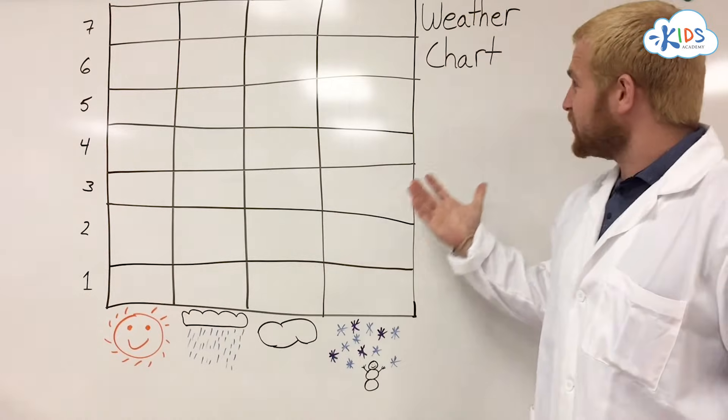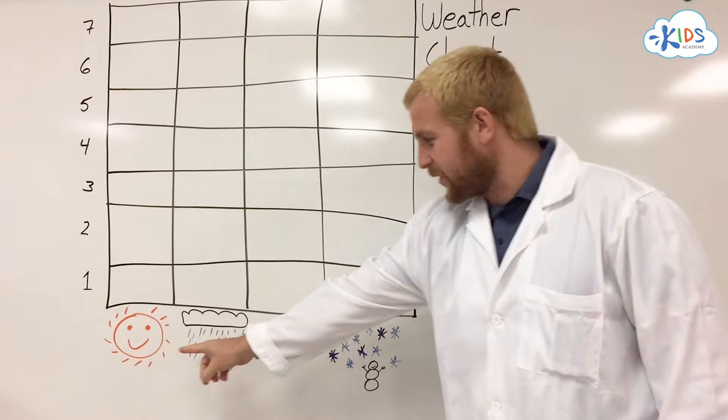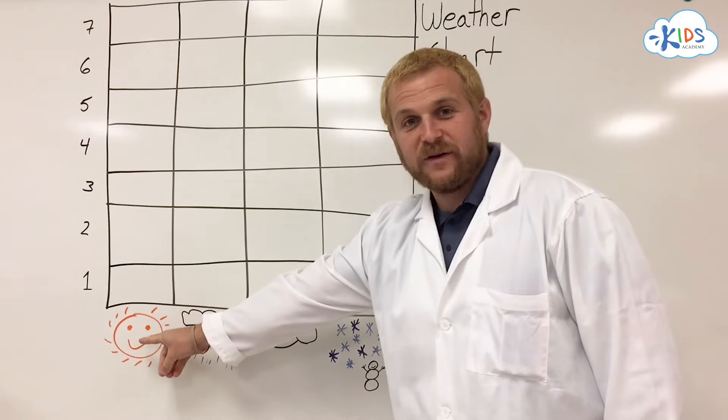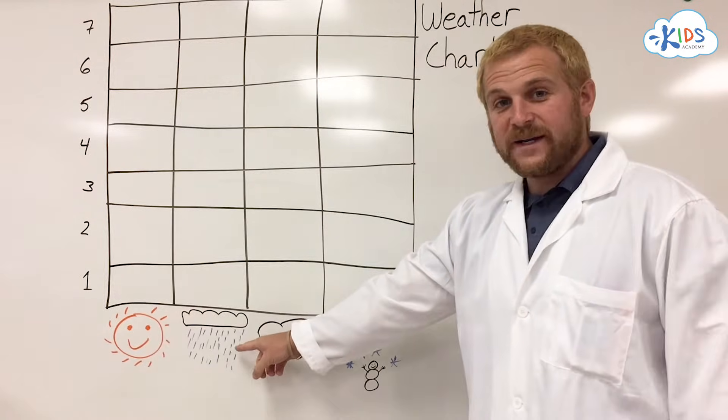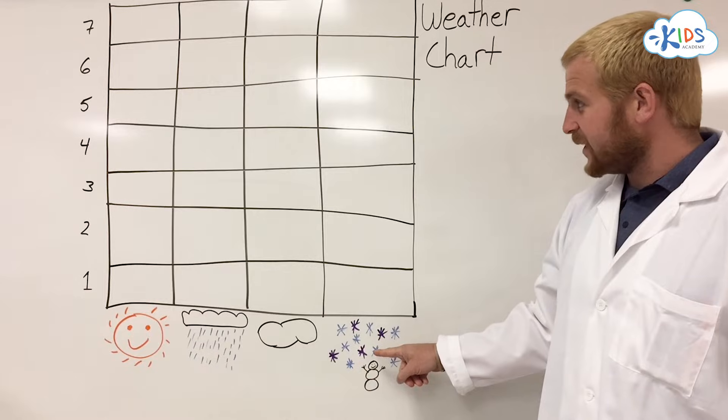What we have here is a simple weather chart. You can see we have different types of weather across the bottom. Here we have sunny days, rainy days, cloudy days, and snowy days.